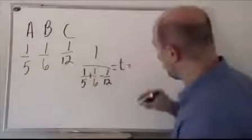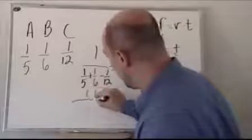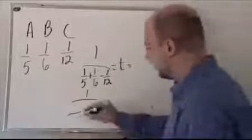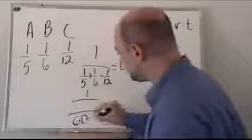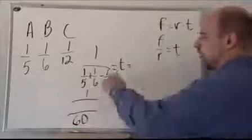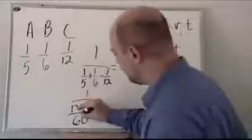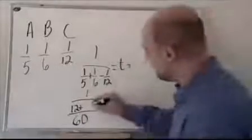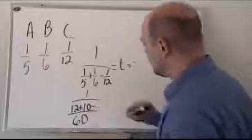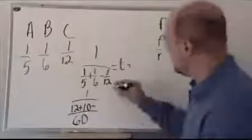So let's just do the math. It's one divided by, and we need a least common denominator, we will use sixty. Five goes into sixty twelve times. Twelve times one is twelve. Plus six goes into sixty ten times. Ten times one is ten. Minus twelve goes into sixty five times.